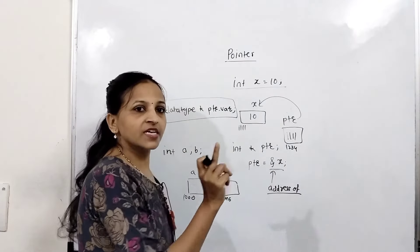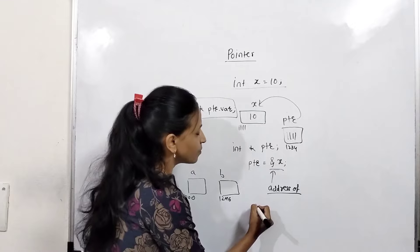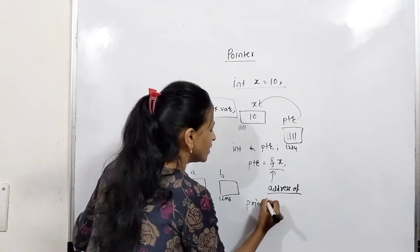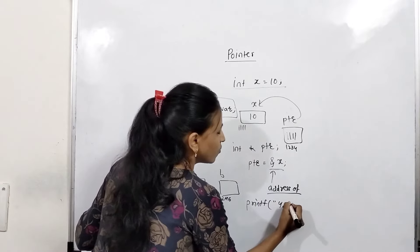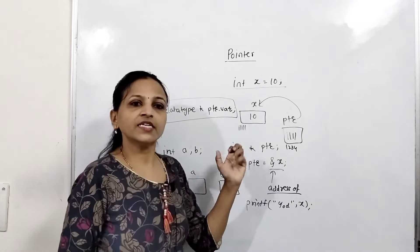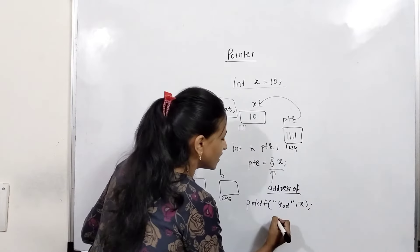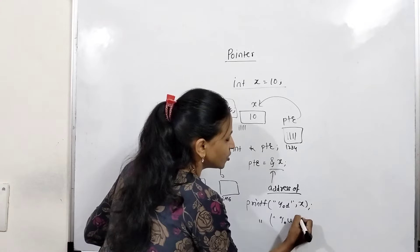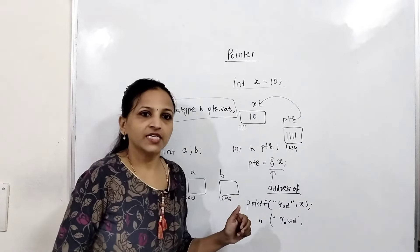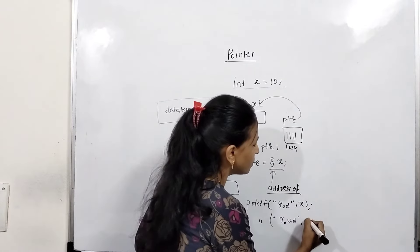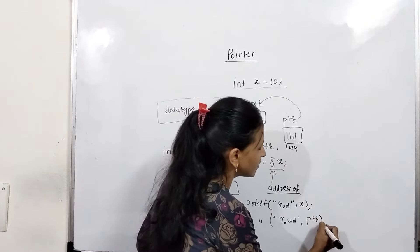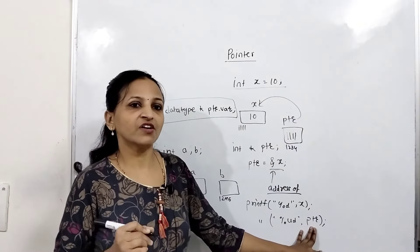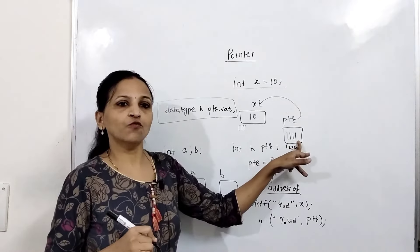We have seen the address-of operator. Now, when we display ptr using printf with %u (unsigned integer format), since ptr holds the address of x which is 1111, the value 1111 will be displayed.